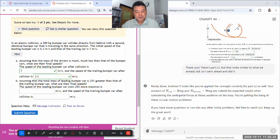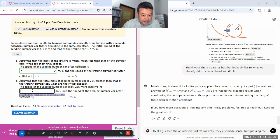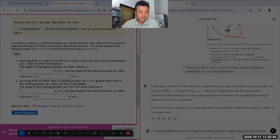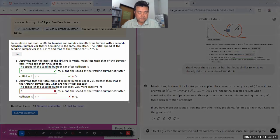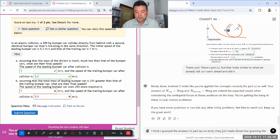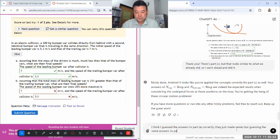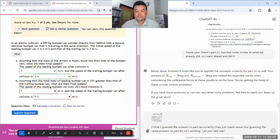Part B is where you actually have to set up the equation and actually do it because their mass being now different actually makes it so that the nice cancellations that would have happened in the nice formula, they don't happen in part B. So I'll do it. I think I guess the answers to part A correctly, they just made sense. But guessing the same answers to part B isn't working. Can you help me please?